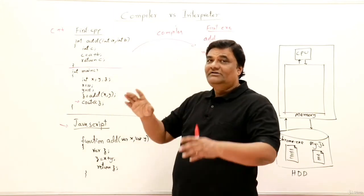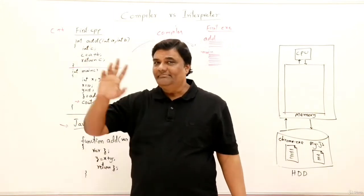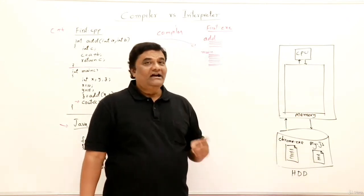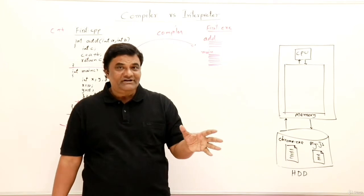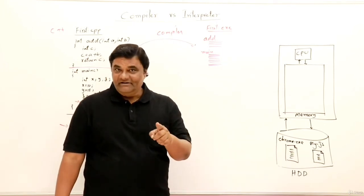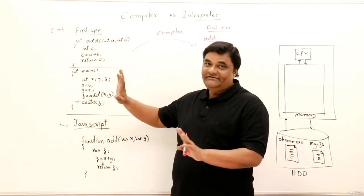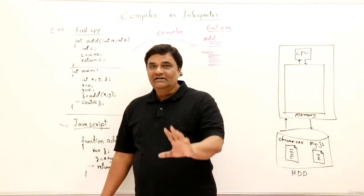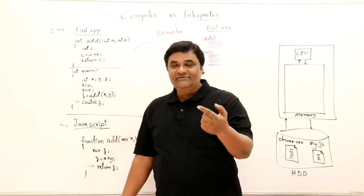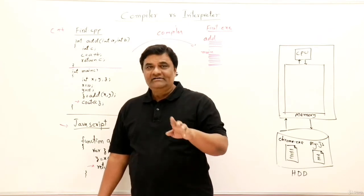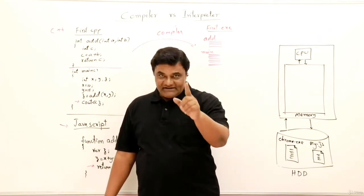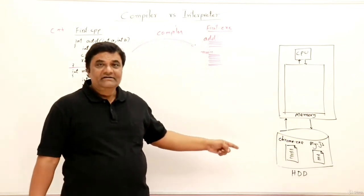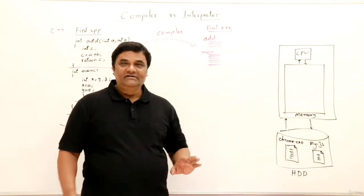Once a compiled program is translated into machine code you can run it as many times as you want without the compiler — translation is done only once. But with an interpreted language like JavaScript, every time you want to run it you must call Chrome; it will translate every time. If you run it n times, translation is done n times. If there is an error in some line, the interpreter will execute all lines before it and then stop at the error.